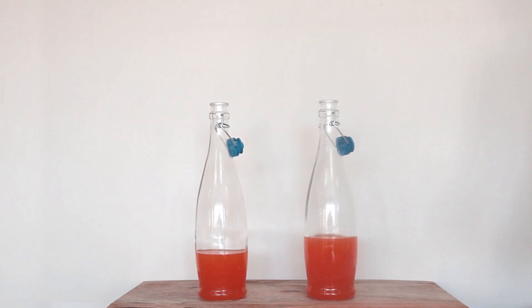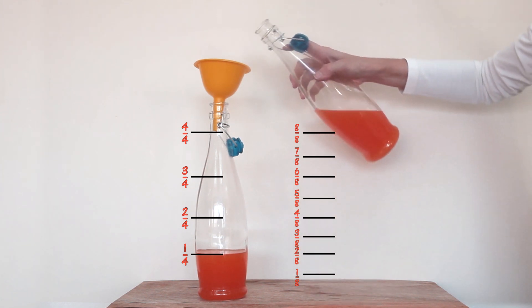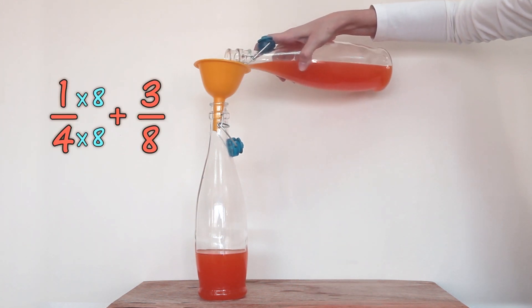You have another bottle of juice which is one-fourth full. Your friend's is three-eighths full. To calculate how much juice you have together, first multiply top and bottom of one-fourth by eight.